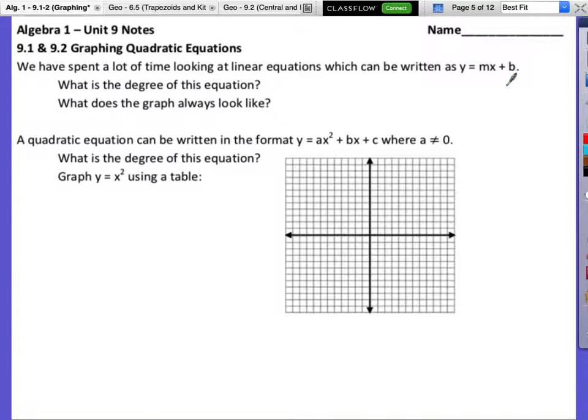So what's the degree of this equation? What's the highest power we see on the x? One. So I got x to the first, right? The degree of this equation was one. And what did the graph always look like? A straight line.